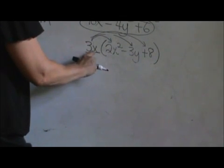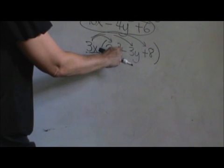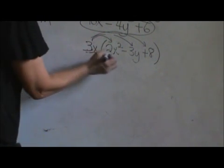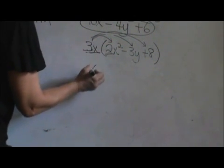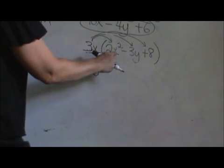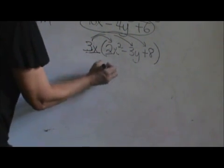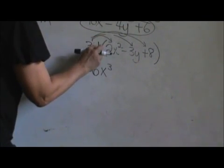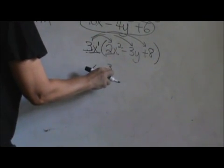So we're going to take 3x times 2x squared. We take the 2 times the 3 which gives us 6. An x times an x squared actually gives us x cubed because we're going to add the exponent. 1 plus 2 gives us 3.